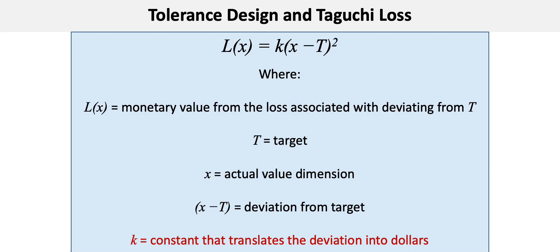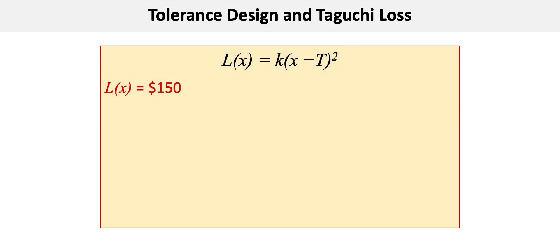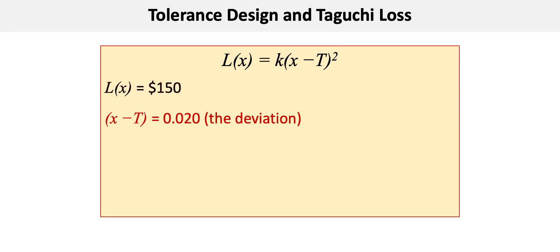So now extended to our problem, L(x) is the repair cost of $150 per unit, (x minus T) is 0.020, and that's the deviation, and k is the constant that we're trying to solve for in this equation.